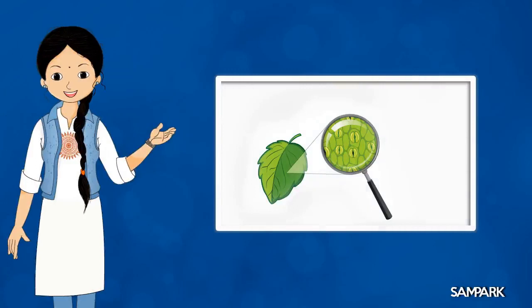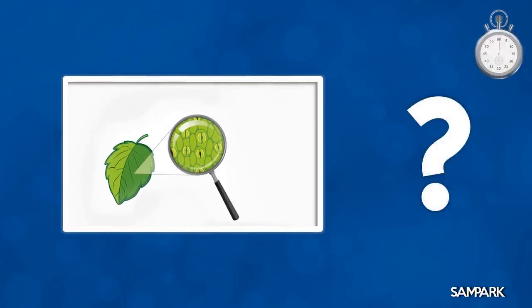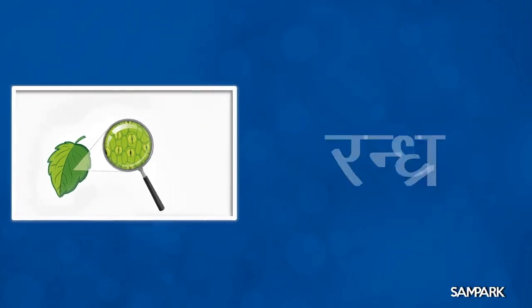बच्चों, इस अगले चित्र में पत्ती की सतह पर पाए जाने वाले छोटे-छोटे छिद्रों के सूक्ष्मदर्शी दृश्य को दिखाया गया है। इन्हें नग्न यानी नंगी आँखों से नहीं देखा जा सकता। क्या आप जानते हैं कि इन्हें क्या कहते हैं? इन्हें रंध्र कहते हैं बच्चों।